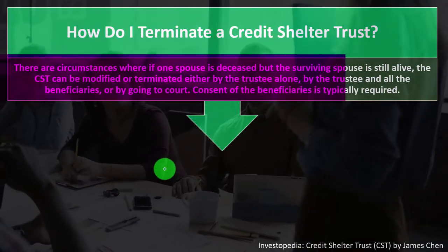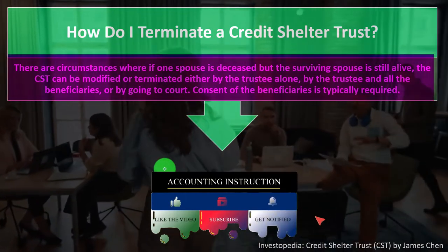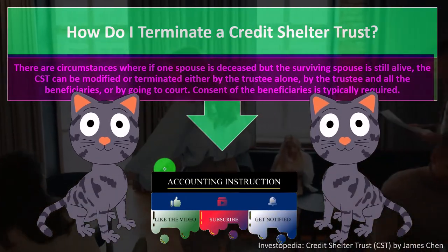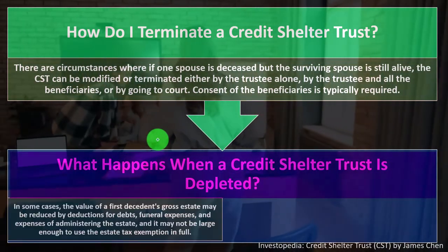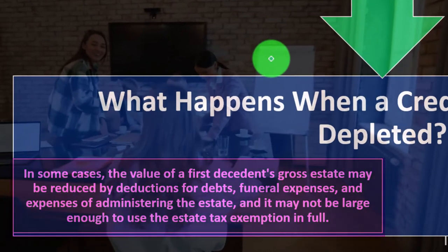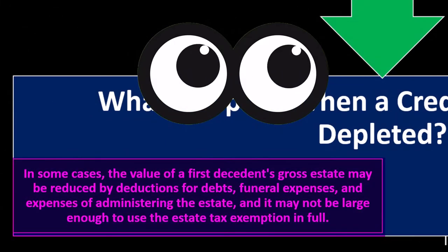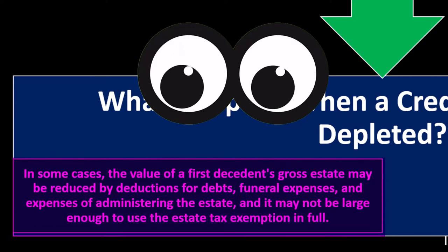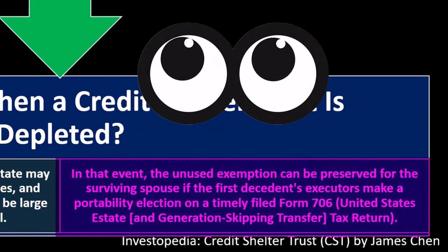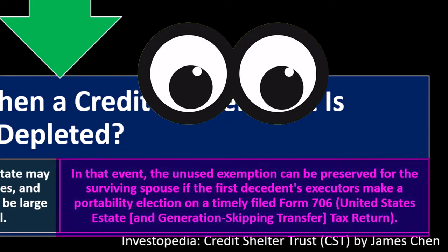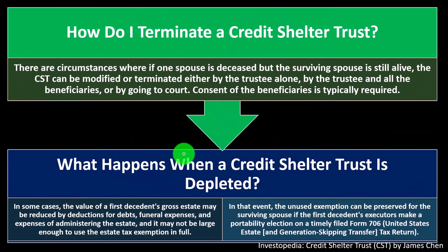How do you terminate a credit shelter trust? If one spouse is deceased but the surviving spouse is still alive, the CST can be modified or terminated either by the trustee alone, by the trustee and all beneficiaries, or by going to court — consent of the beneficiaries is typically required. If the first decedent's gross estate is reduced by deductions for debts, funeral expenses, or administrative expenses and is not large enough to use the estate tax exemption in full, the unused exemption can be preserved for the surviving spouse if the executor makes a portability election on a timely filed Form 706 — the United States Estate and Generation-Skipping Transfer Tax Return.